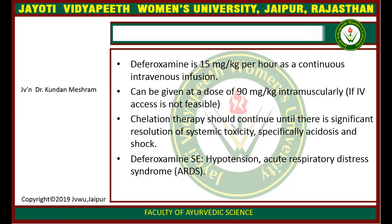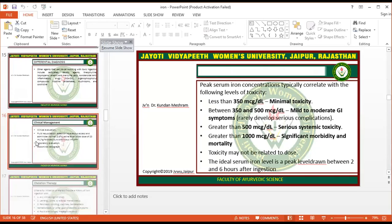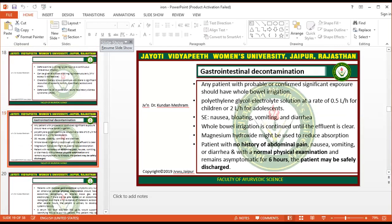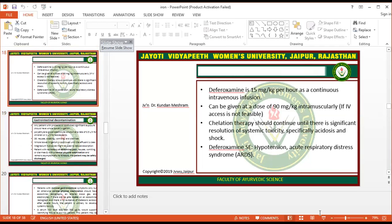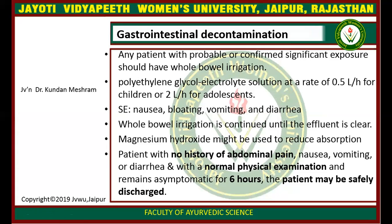Desferrioxamine side effects include hypotension and acute respiratory distress syndrome (ARDS). Regarding gastrointestinal decontamination, any patient with probable or confirmed significant exposure should have whole bowel irrigation using polyethylene glycol electrolyte solution at a rate of 0.5 L per hour for children or 2 L per hour for adults. Side effects include nausea, bloating, vomiting, and gagging.